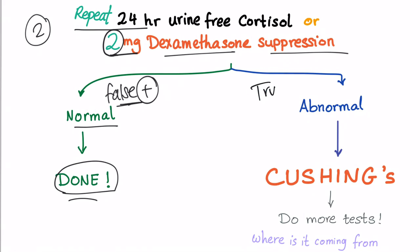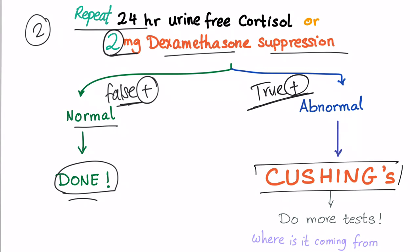However, if the test is abnormal again, I have confirmed this patient has Cushing's — it is a true positive. Now I need to do more tests to determine what kind of Cushing's it is and where the excess cortisol is coming from. Is it the adrenal gland, the pituitary, or an ectopic source?